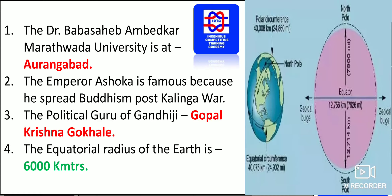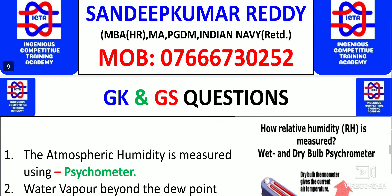The political guru of Gandhiji was Gopal Krishna Gokhale. The equatorial radius of the earth is approximately 6,000 kilometers.